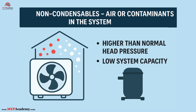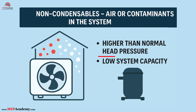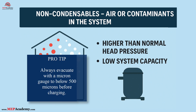Number five: non-condensibles — air or contaminants in the system. Air or non-condensible gases can be accidentally introduced during poor evacuation or improper charging, leading to high head pressure and poor heat rejection at the condenser. Non-condensibles like air or nitrogen do not condense in the condenser, so they take up space and reduce heat transfer efficiency, causing head pressure to rise and reducing system capacity. Pro tip: always evacuate with a micron gauge to below 500 microns before charging.